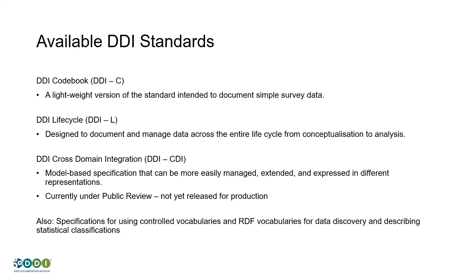Currently there are two major production standards in DDI: DDI Codebook and DDI Lifecycle. Codebook is a lightweight version of the standard — simpler to use but supporting fewer things. It's really looking at an existing dataset, one wave of data collection, documented in the way someone could take as a codebook — what's called a codebook in the research world, or a data dictionary. It's a document in XML about a single wave of data collection.